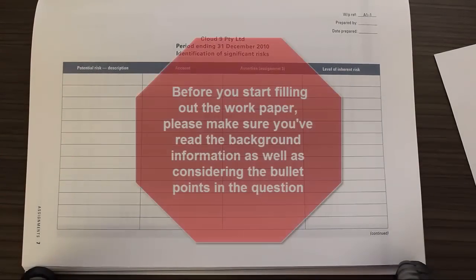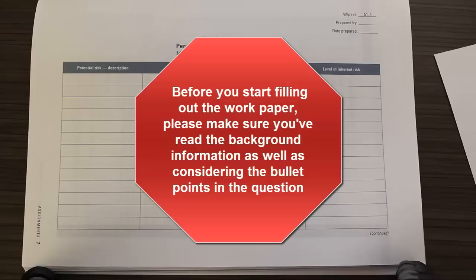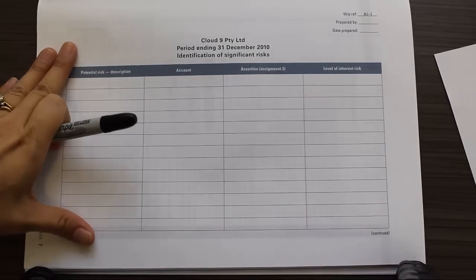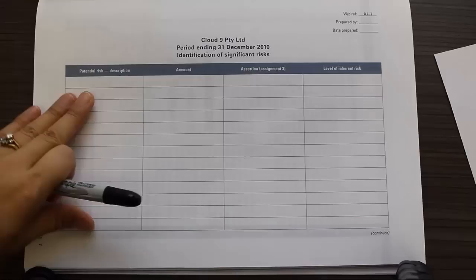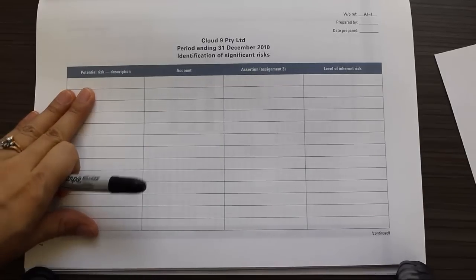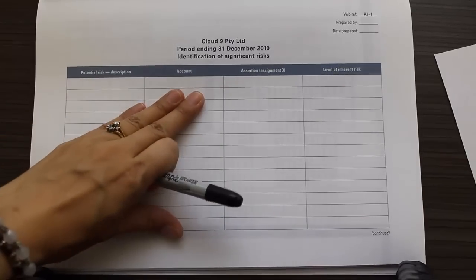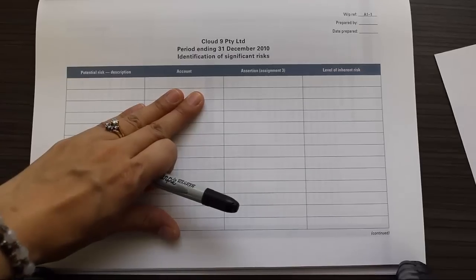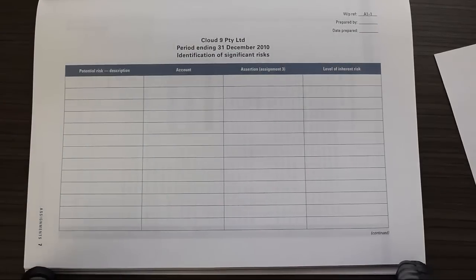Make sure that you go through the background information and the bullet points that the case asks you to examine. For the assignment we need to complete two tasks: one, we need to identify the significant or inherent risks; and two, we need to identify the account with which the risk is related.